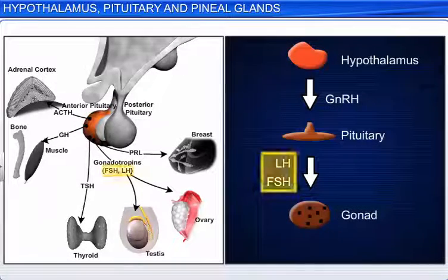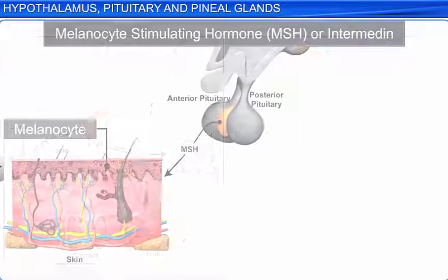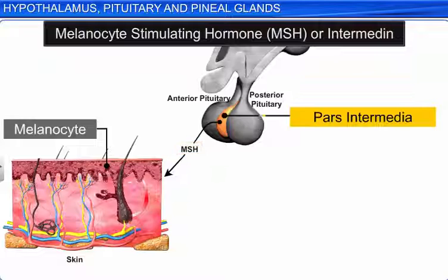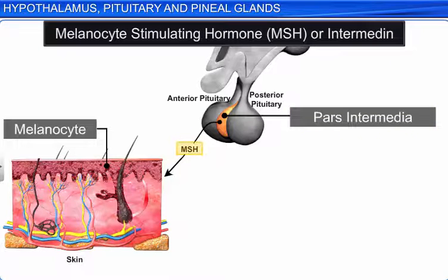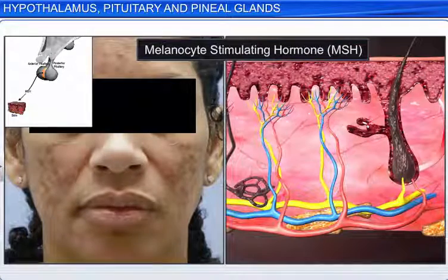Together, FSH and LH are called gonadotrophins because their target organs are the gonads. MSH, or intermedin, is the only hormone secreted by the pars intermedia. MSH regulates skin pigmentation by stimulating the melanocytes.